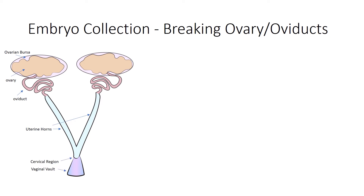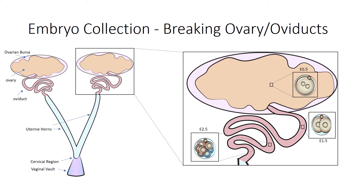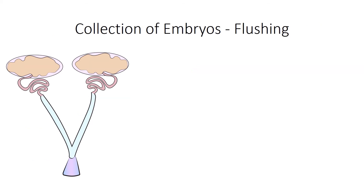To collect early pre-implantation embryos we have to break the ovary or the oviducts apart, in the case of the zygote or the two-cell stage embryo respectively. The eight-cell stage embryos can be found in the oviducts as well as in the uterine horns, which must be considered when collecting E2.5. From E2.5 to E4.5, stages preceding implantation, the embryo can be found free floating in the uterine horns.